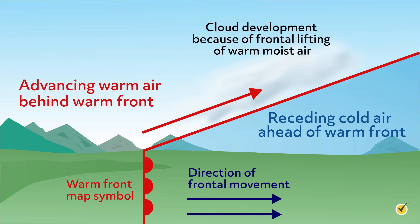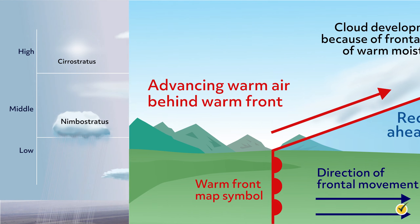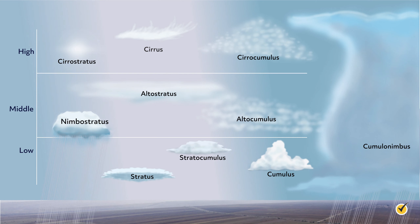Now that we know how clouds form, let's get into the different types of clouds and examine the conditions in which they form. To start off basic, we have low, middle, and high clouds. Low clouds form from the ground to about 6,000 feet. Middle clouds are found at about 10,000 feet on average, and high clouds are found at altitudes around and above 20,000 feet. Some clouds, such as cumulonimbus clouds, are large and tall enough to transverse all three layers.